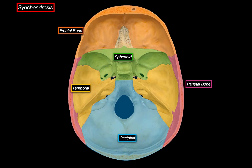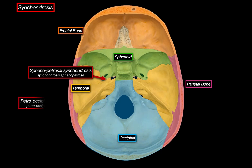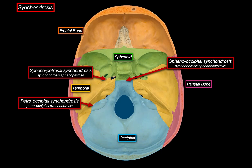Of the synchondroses we can identify in the skull, one is the sphenopetrosal synchondrosis, connecting the sphenoid bone with the petrous part of the temporal bone. Then there's the petrooccipital synchondrosis, which links the petrous temporal with the occipital bone. Next we have the sphenooccipital synchondrosis, which is a major one.